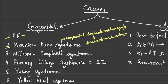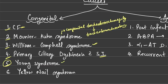Initially there is tracheobronchomegaly, then tracheobronchomalacia, which eventually leads to bronchiectasis. Third is Williams-Campbell syndrome, where there is destruction of cartilage. Fourth is primary ciliary dyskinesia with situs inversus, known as Kartagener syndrome. Fifth is Young syndrome, and sixth is Yellow nail syndrome.